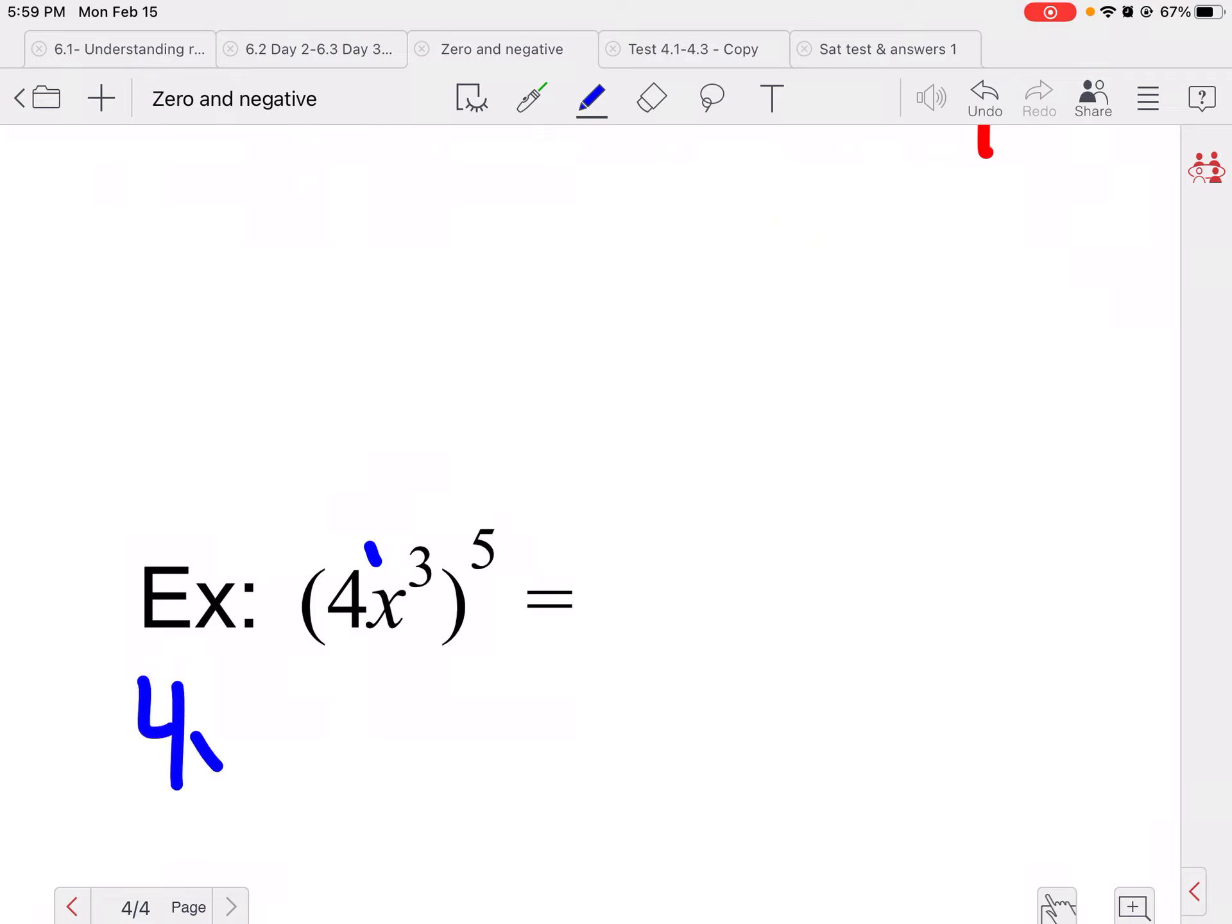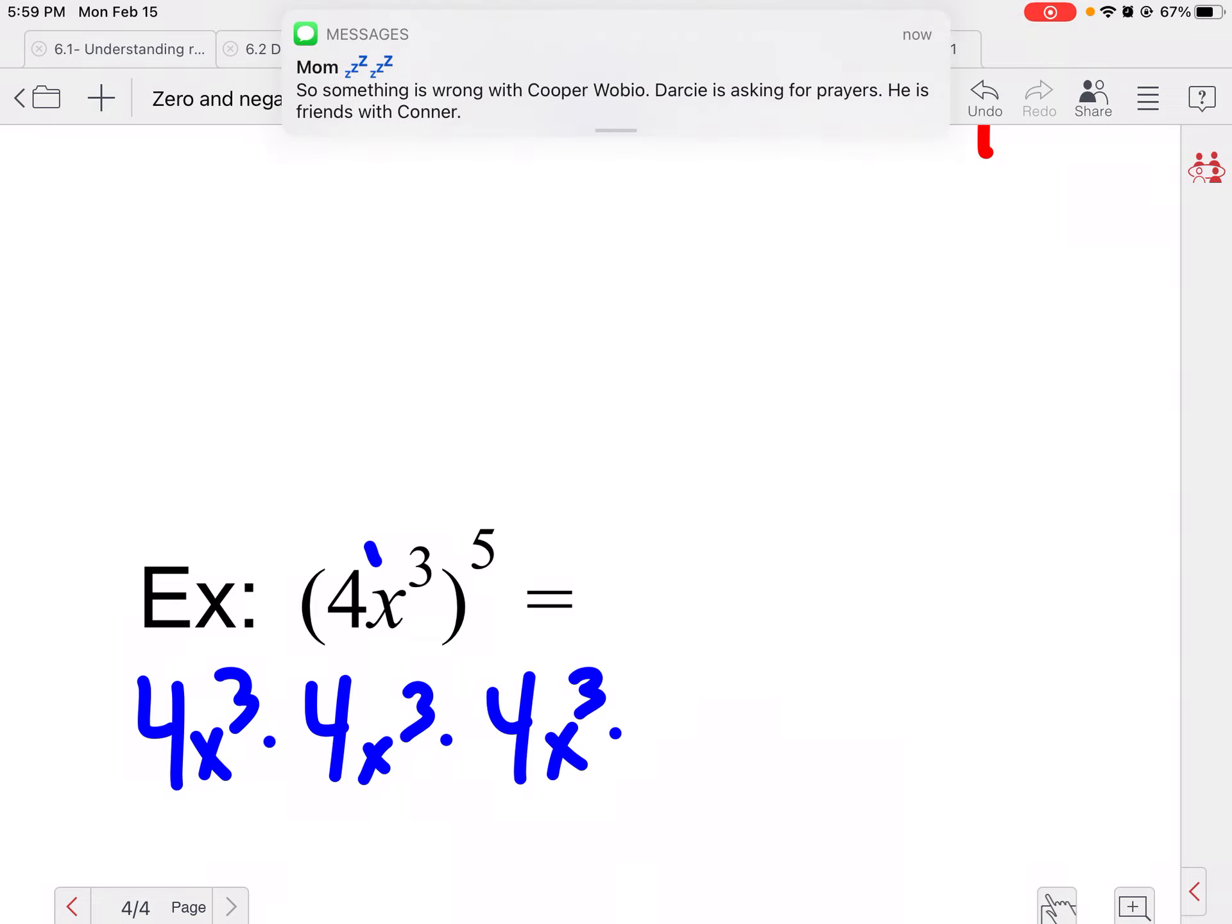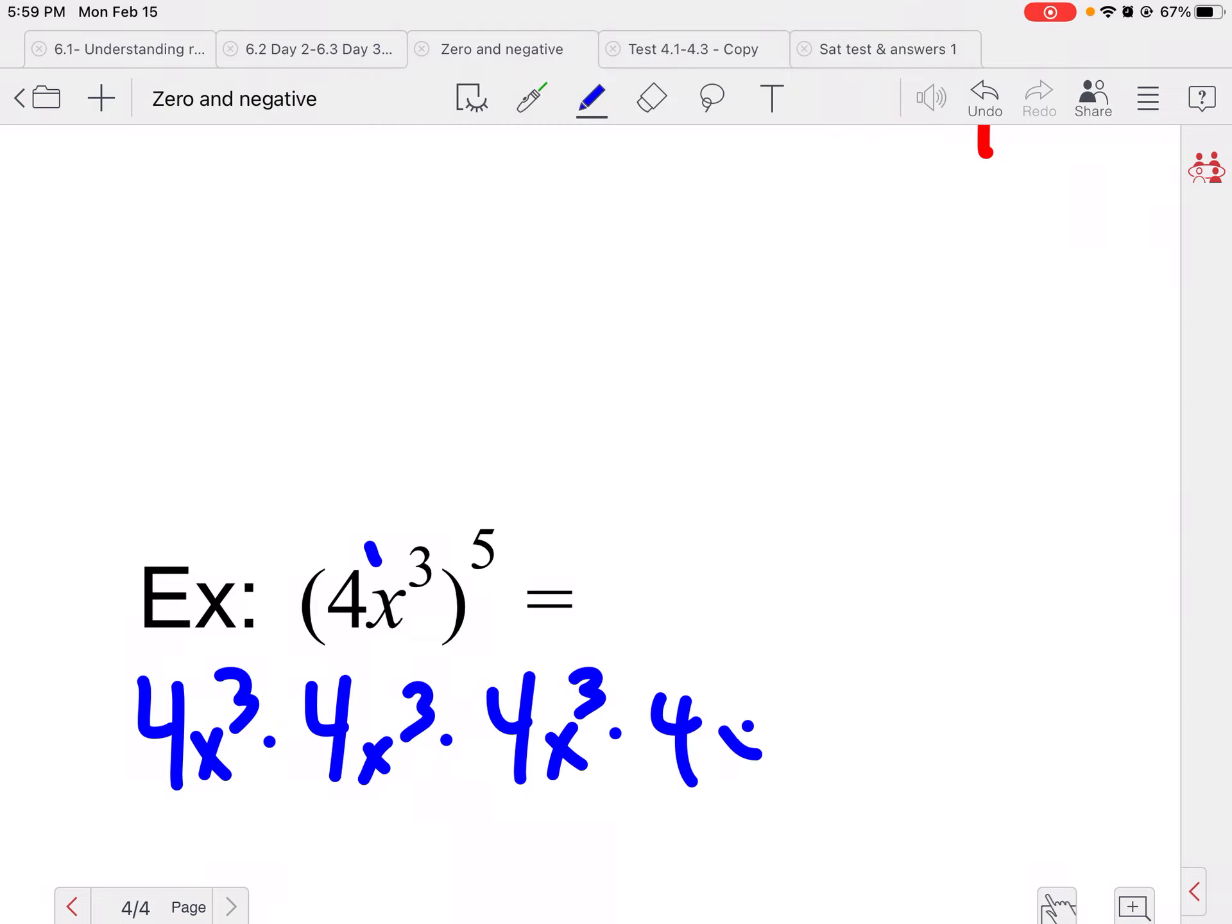Now this one, there's a one here. So this really means four x to the third times four x to the third times four x to the third times another four x to the third times another four x to the third. So notice I still have one, two, three, four, five fours.